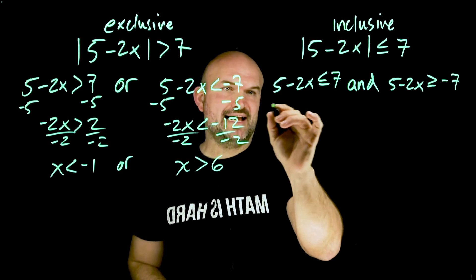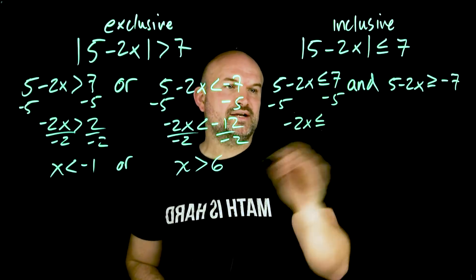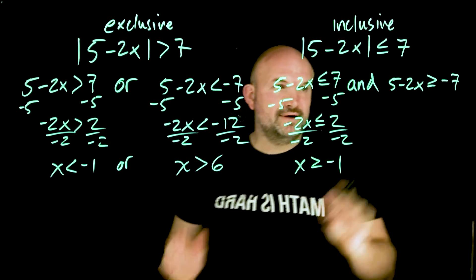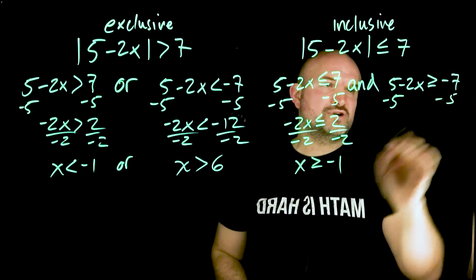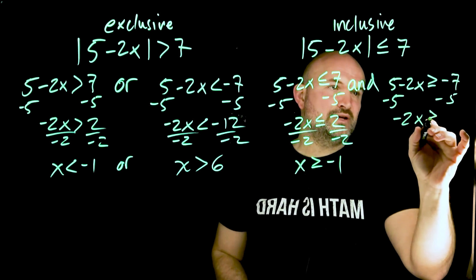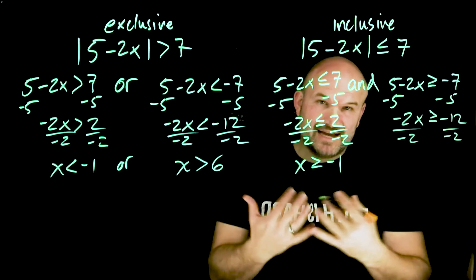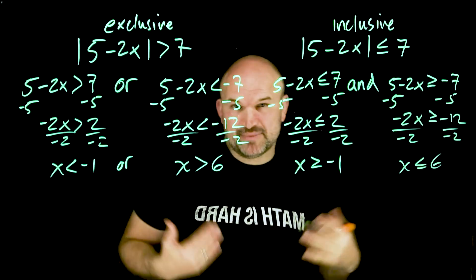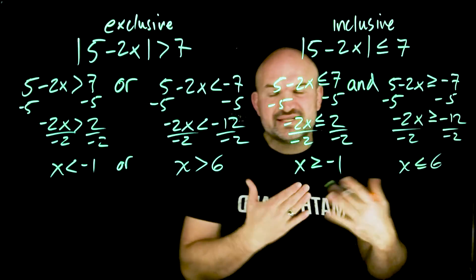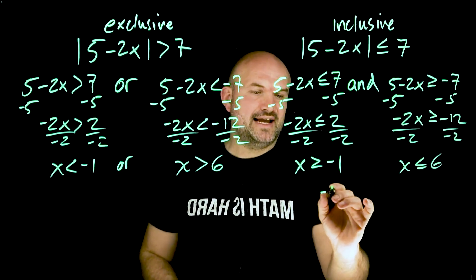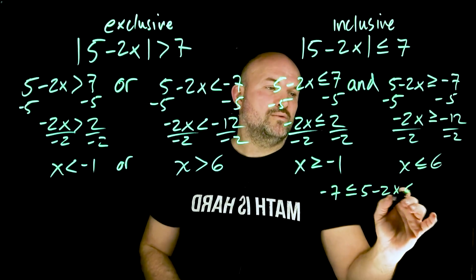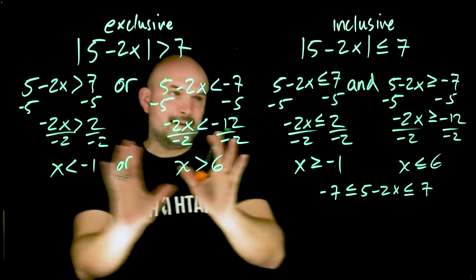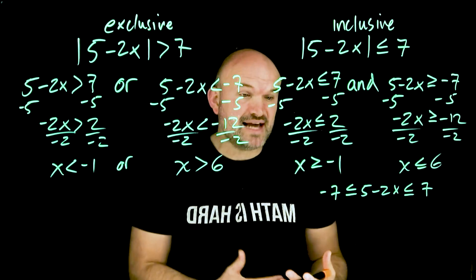Now for the 'and' case: subtracting five gives negative two X less than or equal to positive two; dividing by negative two and flipping the sign, X is greater than or equal to negative one. On the other side, subtracting five from both sides gives negative two X greater than or equal to negative twelve; dividing by negative two and flipping the sign, X is less than or equal to positive six. You could also create a compound inequality: negative seven ≤ five minus two X ≤ positive seven, which yields the exact same results and is a bit faster.